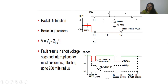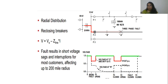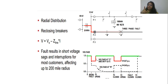The relay will energize the F2 breaker, causing it to open — F2 voltage becomes zero since it is disconnected. Since the fault is isolated, F1 and F3 voltages quickly recover. However, both F1 and F3 experienced the sag even though the fault was only in F2.